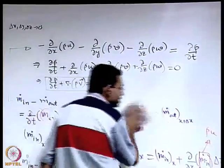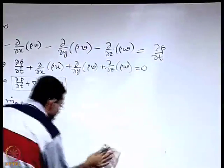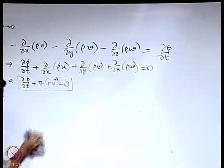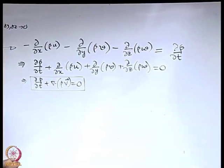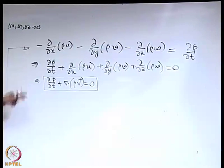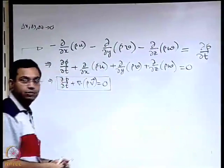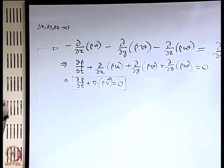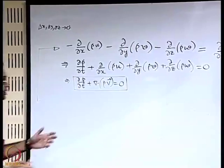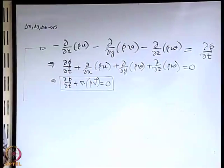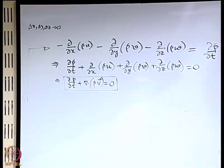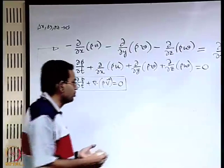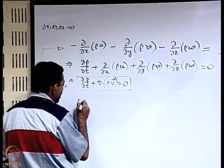We have now seen at least two different ways of deriving the continuity equation — these are not the only two ways, but they give us insight into what this equation is about. The first observation is that this is a differential form. If we want to express it in an integral form, we will later formally see a methodology to convert from differential to integral form. For now, let us look into a simple example using 1-dimensional steady flow.